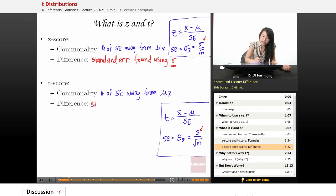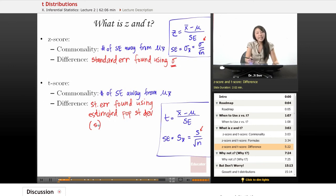Then the standard error found using estimated population standard deviation, and that is s. And s is really estimated from the sample.